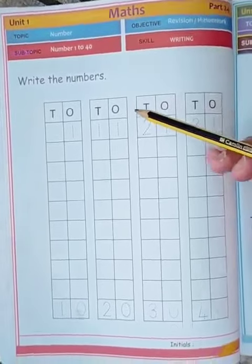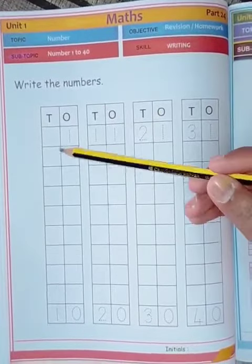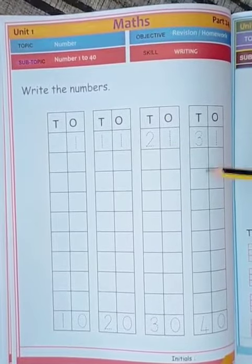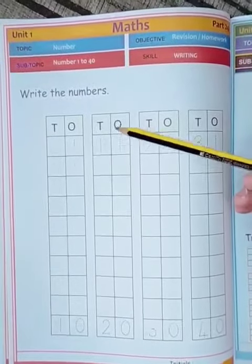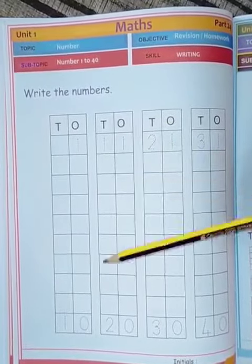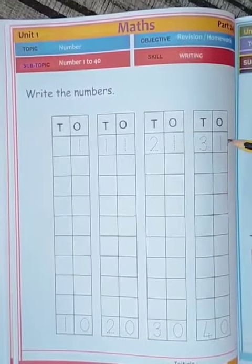Moving to the next page, you have to write numbers 1 to 40 in the given columns. Here you write 1 to 10 in this column, 11 to 20 in this column, 21 to 30 in this column.